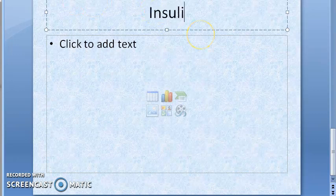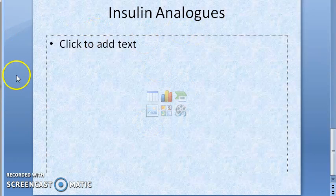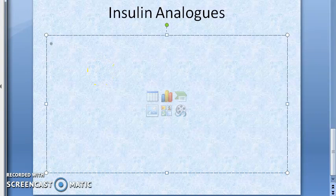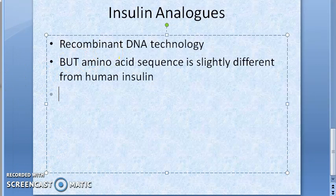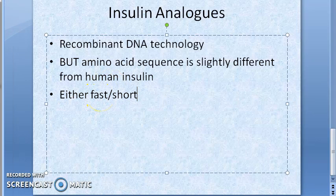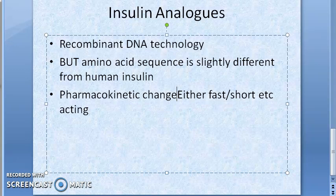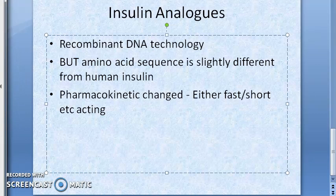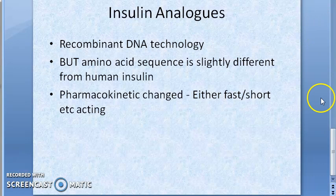Now, insulin analogs. These are also made by recombinant DNA technology, but they are slightly different in amino acid sequence. Because of this, their pharmacokinetic profile is altered — they will be either fast acting, short acting, or other durations. So the pharmacokinetics change based on the modification.